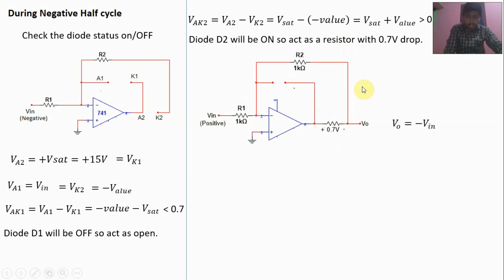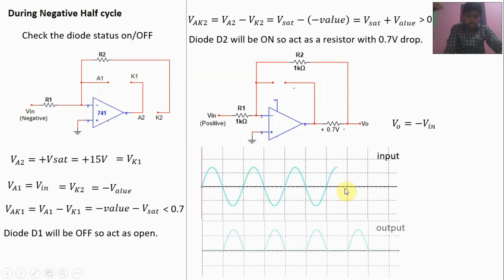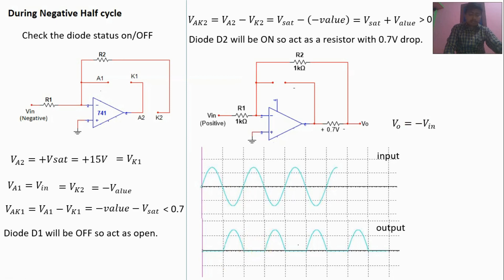Since this is a feedback configuration, V-plus equals V-minus. This is an inverting amplifier configuration. Applying KCL at the junction, we find V-out equals minus V-in. So for the positive half cycle the output is 0, and for the negative half cycle V-out equals minus V-in. If the input is a negative input, the output will be a positive output — that is, an inversion of the input. Positive half cycle: output is 0. Negative half cycle: output is the inversion of the input.